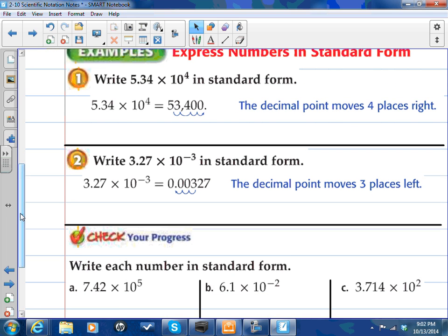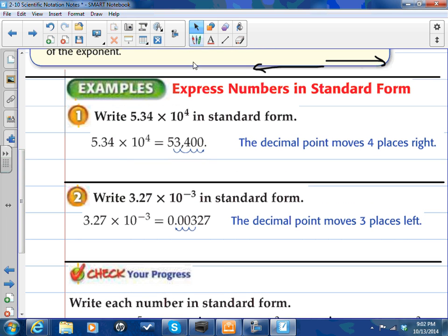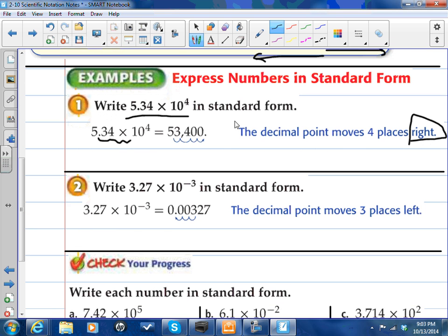So, if I were to express the number in standard form, if I was shown 5.34 times 10 to the 4th power, and I want to write that in standard form, what I do is I simply move the decimal 4 places to the right. How do you know to move to the right, Ms. Simmers? Well, since that 4 is a positive, and positive numbers go to the right, that's how I know it goes 1, 2, 3, 4 places to the right of that decimal.